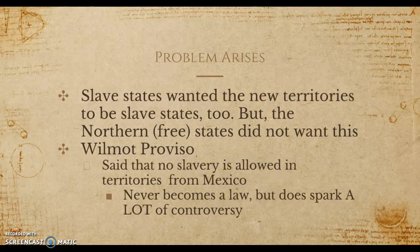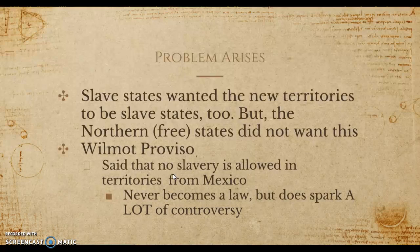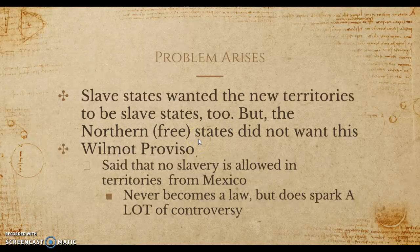One somewhat important proposal, even though it doesn't pass, is the Wilmot Proviso. This essentially said that no slavery would be allowed in territories acquired from Mexico — meaning no slavery in California, Nevada, Utah, Arizona, New Mexico, or Texas. It never became a law, but it sparked a lot of controversy, because sectionalism was boiling over. People started bringing it up, calling it an unfair plan, and then throwing out their own plans. Even though the Wilmot Proviso did not pass, it sparked the conversation, which is important.